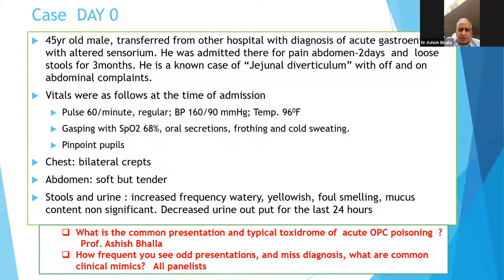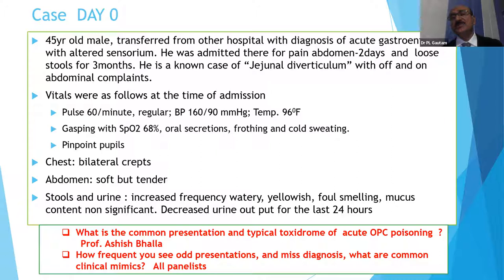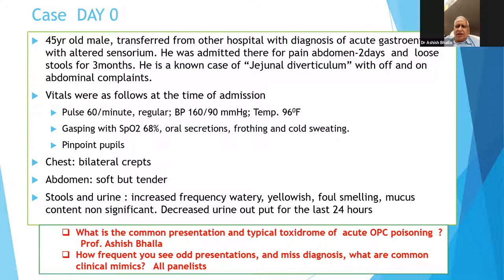To summarize the classic toxidrome: all secretions are increased — excessive salivation, lacrimation, vomiting, diarrhea, excessive sweating. There will be bradycardia and hypotension, followed by paralysis and weakness of muscles. At times fasciculations may also be seen. That's the typical cholinergic toxidrome.